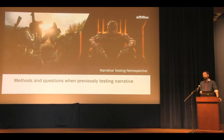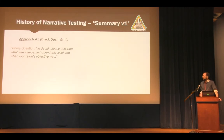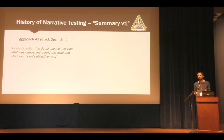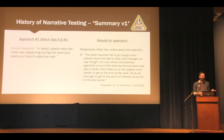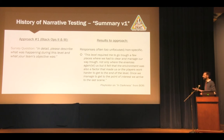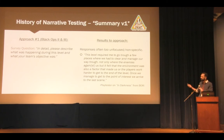We'll go through the history of how we got to that point. On Black Ops 2, we used a survey question asking playtesters — usually groups of four to six — to describe in detail what was happening during the level and what their team's objective was. We got very mixed results. Answers were often terrible — 'my primary objective was to complete my primary objective,' or 'to complete this survey.' Even more robust answers gave almost nothing substantive — essentially the description of any Call of Duty level.